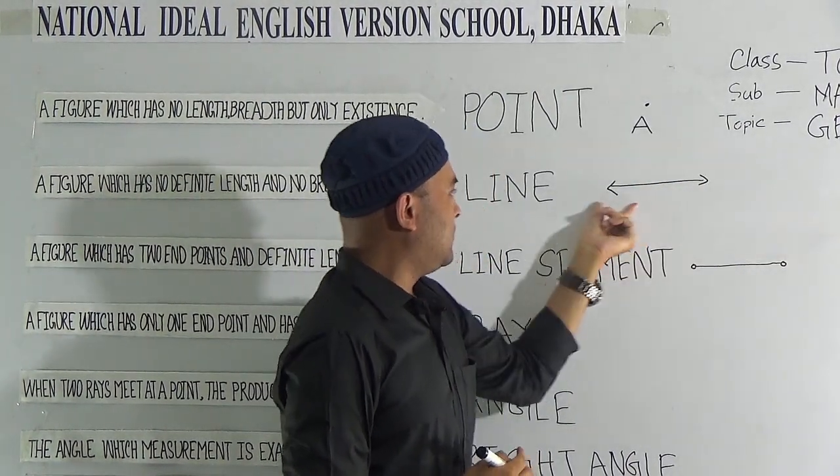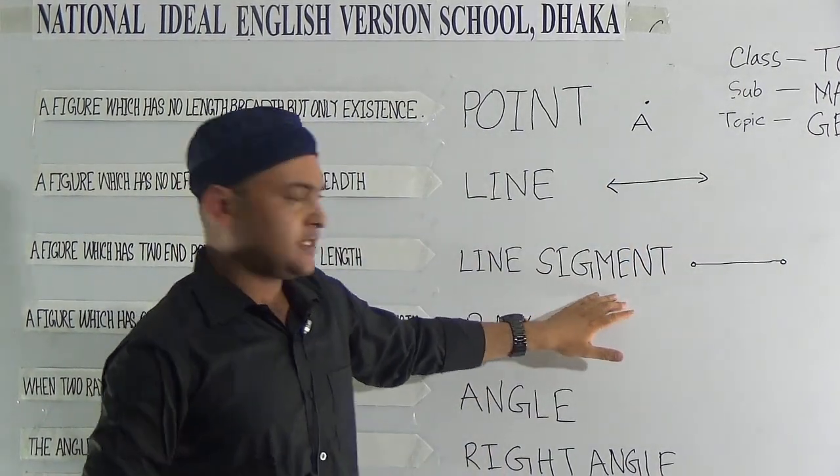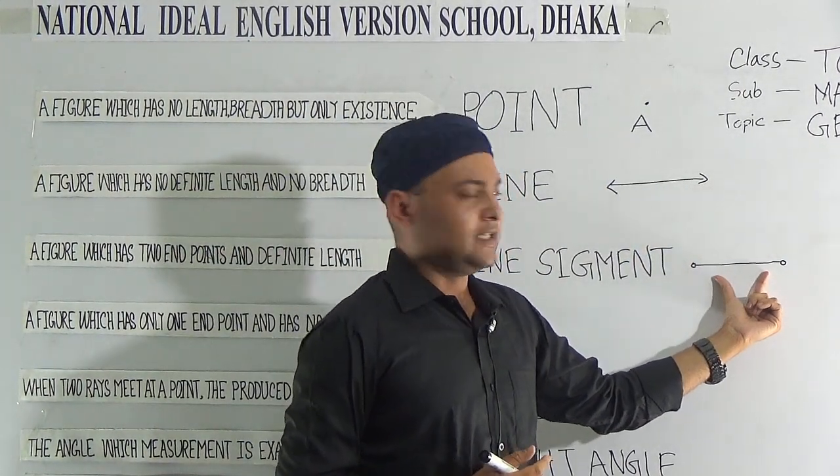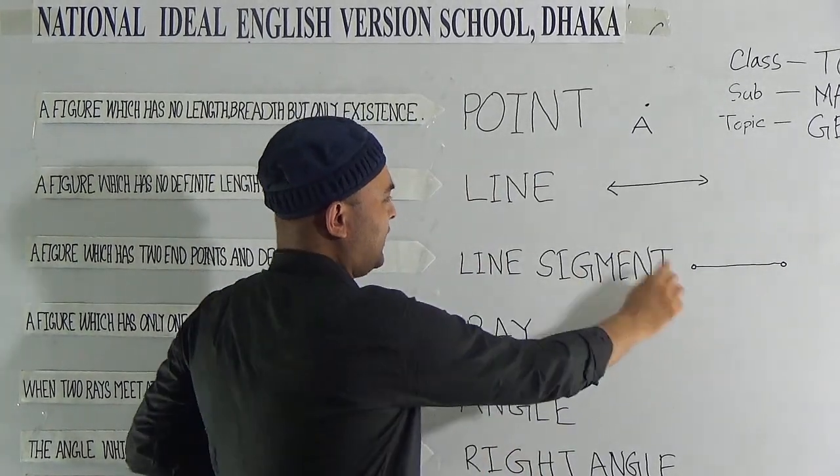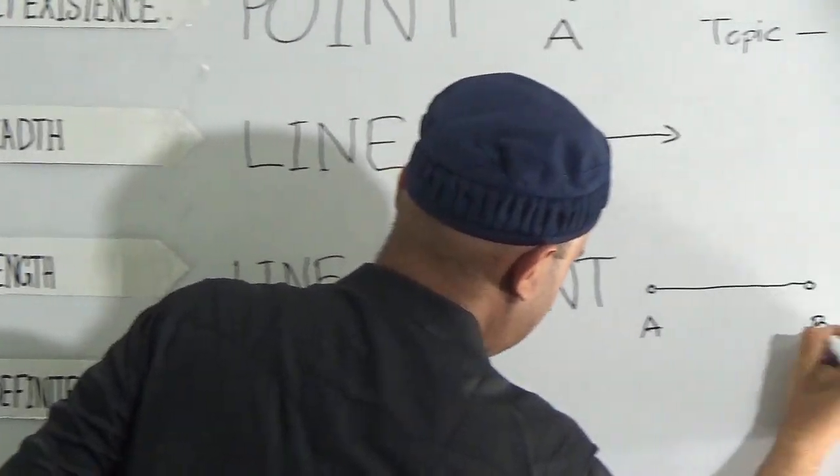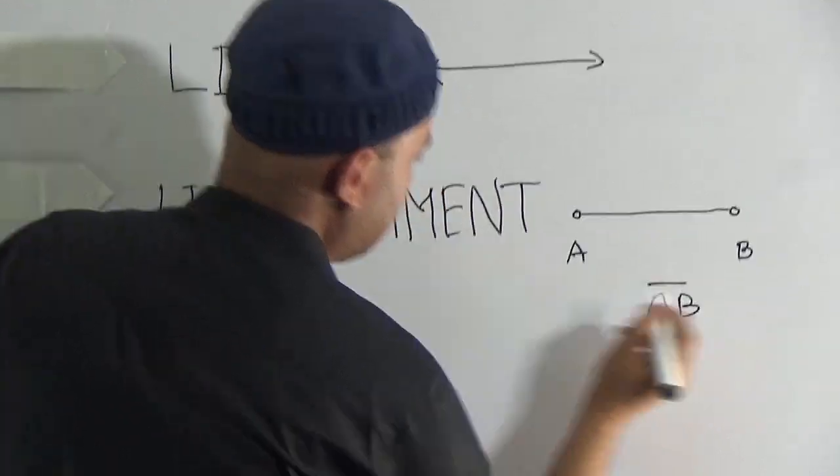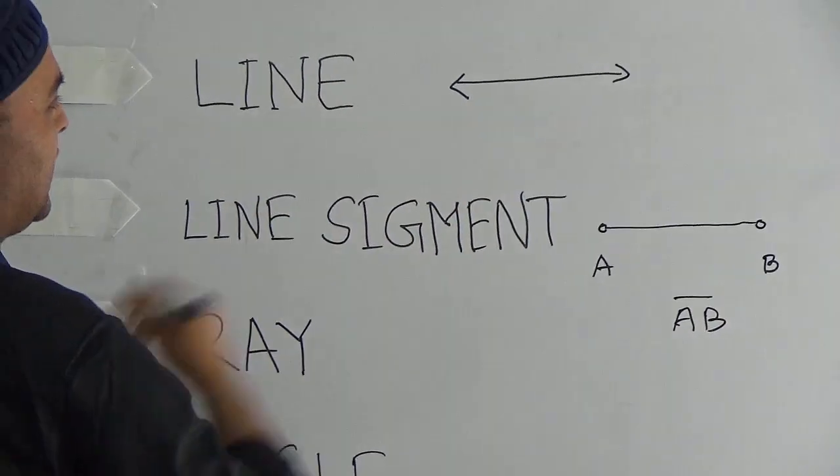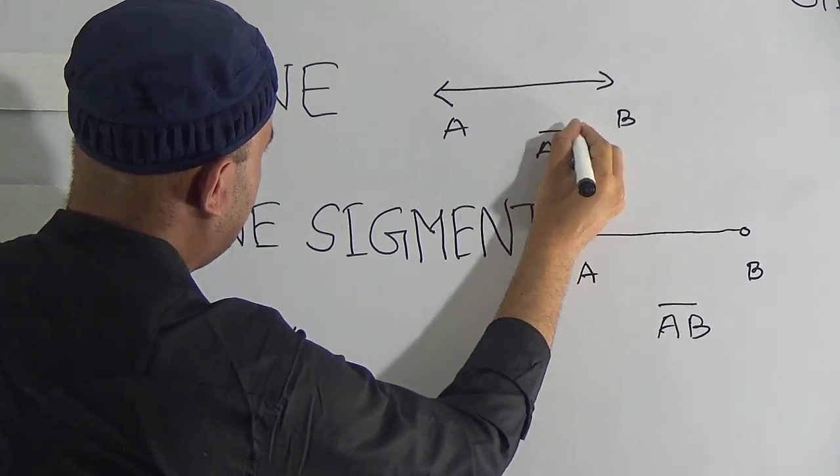The difference between line and line segment is there is no limitation for the length in line, but in line segment there is a limitation of length. If we consider this is point A and this is point B, then AB is a line segment.